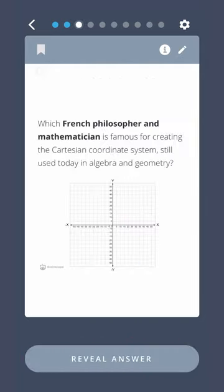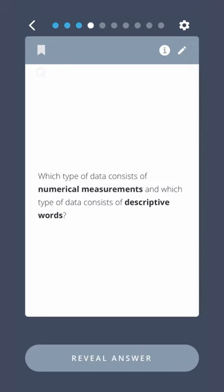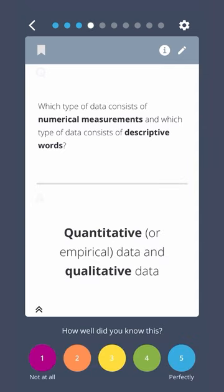Which French philosopher and mathematician is famous for creating the Cartesian coordinate system still used today in algebra and geometry? René Descartes. Which type of data consists of numerical measurements and which type of data consists of descriptive words? Quantitative or empirical data and qualitative data.